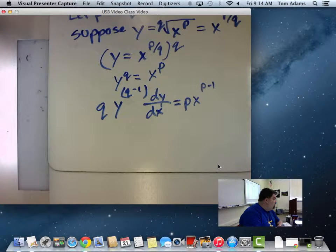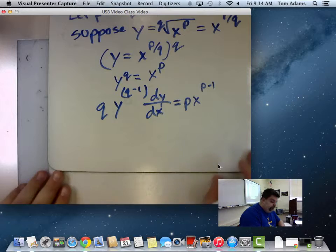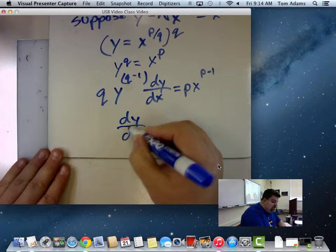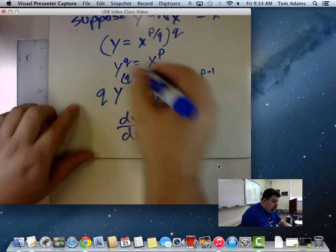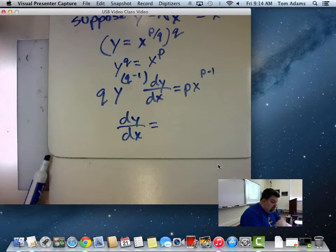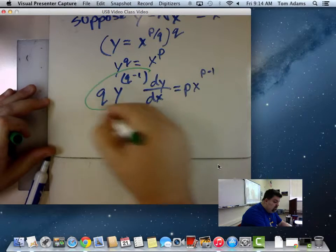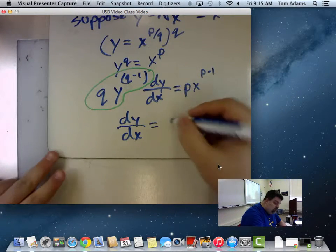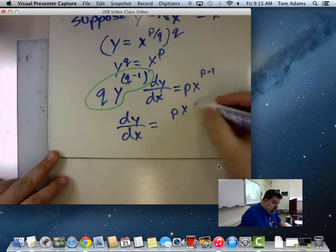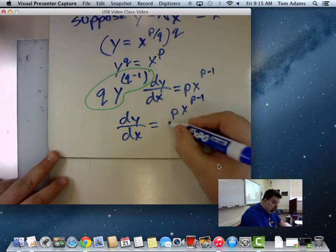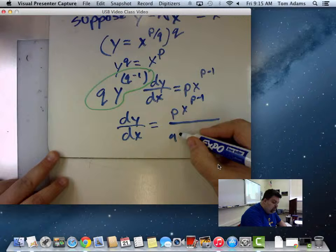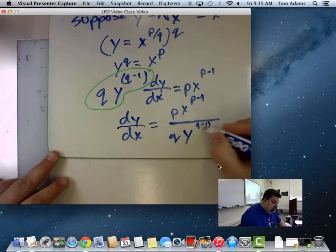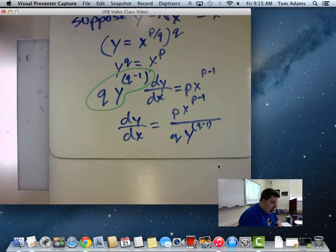We're doing implicit differentiation. So now to get DY DX by itself, I say that DY DX is equal to, I'm just going to divide both sides by all this stuff, right? I'm going to divide both sides by that. And so that should yield P times X raised to the P minus 1 all over Q times Y raised to the Q minus 1, okay?